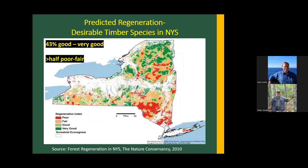The Nature Conservancy did a follow-up study looking at forest inventory data in 2010 and published a report. When we look at desirable timber species, greater than half the state has regeneration in the poor or fair range. It's particularly problematic in the Hudson Valley region, Long Island, and in the southern Adirondacks. For desirable timber species — things like maple, oak, ash, cherry — we're having difficulty regenerating those across the state.